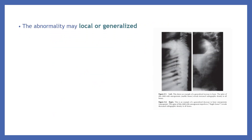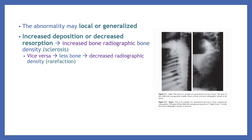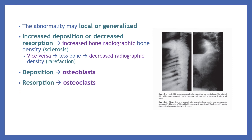The abnormality may be localized or generalized. Increased deposition or decreased resorption leads to increased radiographic bone density, seen as sclerosis, or vice versa. In less bone, decreased radiographic density is called rarefaction. The deposition is by osteoblast, while the resorption is by osteoclast.